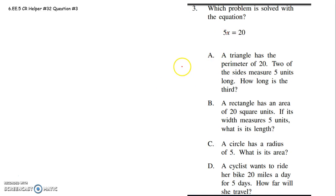Let's look at letter A. A triangle has a perimeter of 20. Two of the sides measure 5 units long. How long is the third? So if two sides measure 5 units, it's a 5, that's a 5. The third side you don't know - you could call that third side x.